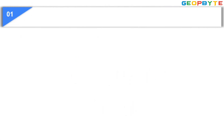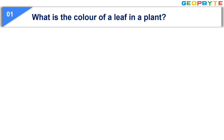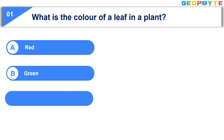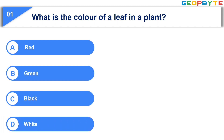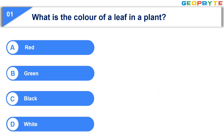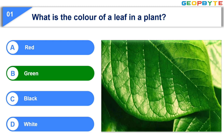The first question is: What is the color of a leaf in a plant? Option A, red. Option B, green. Option C, black. Option D, white. Your time starts now. Your time is up and the correct answer is Option B, green.